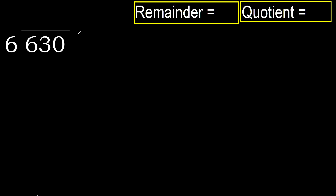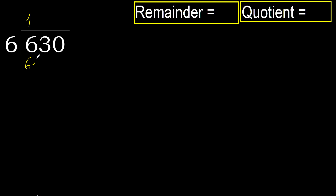630 divided by 6. 6 is not less, so we work with 6. 6 multiplied by which number is nearest to 6 but not greater? 6 multiplied by 2 is 12, which is greater. Multiply by 1: 6 is not greater. OK. Subtract: 6 minus 6 equals 0.